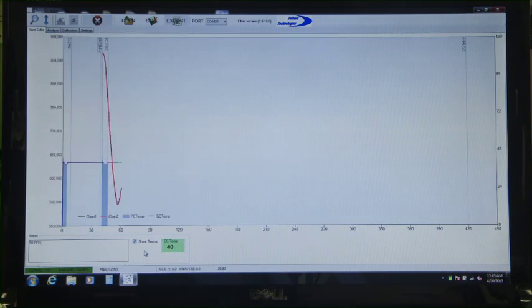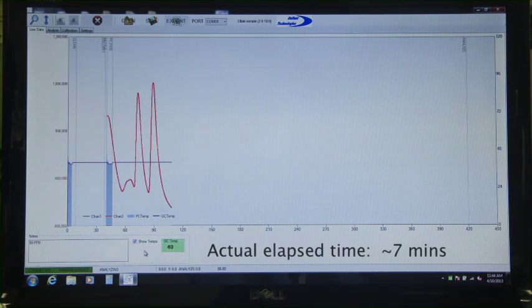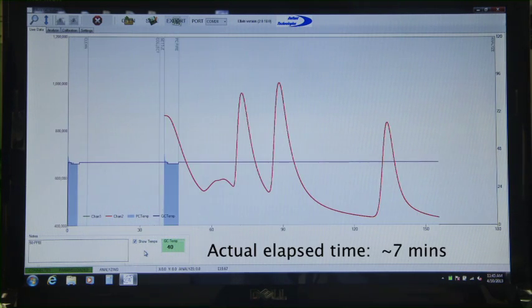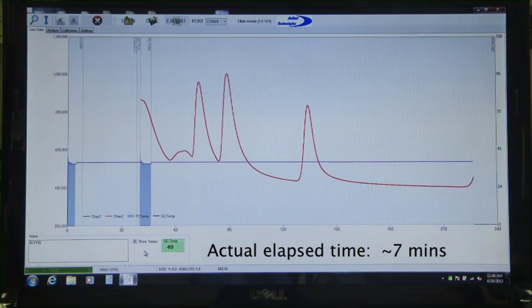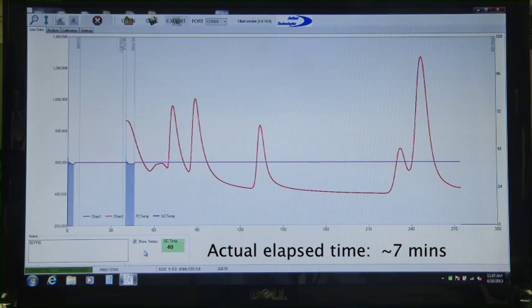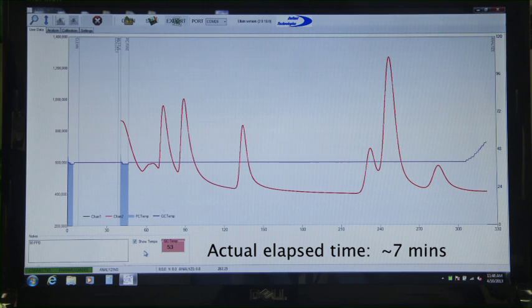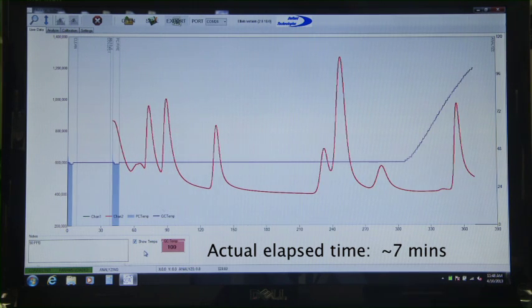As the chromatogram unfolds in the live data window, the peaks for the analytes emerge one at a time. The time the analyte emerges from the column, called the elution time or retention time, is characteristic of the analyte and is used to identify it.